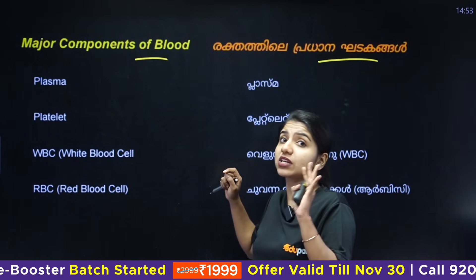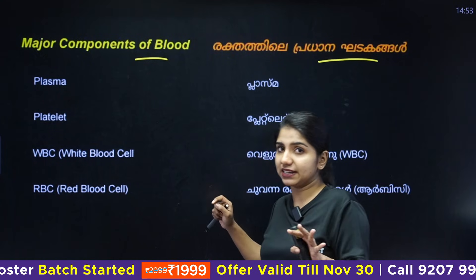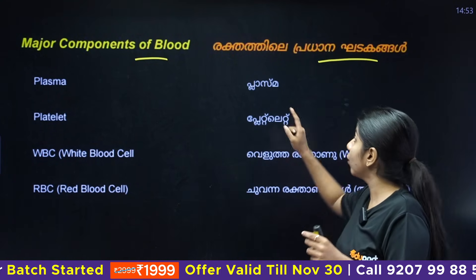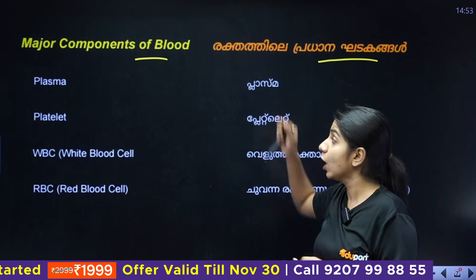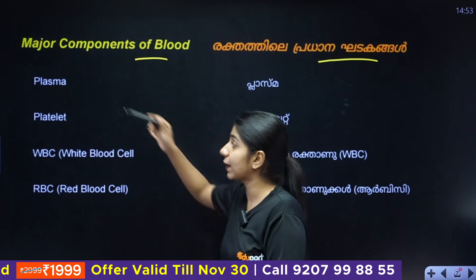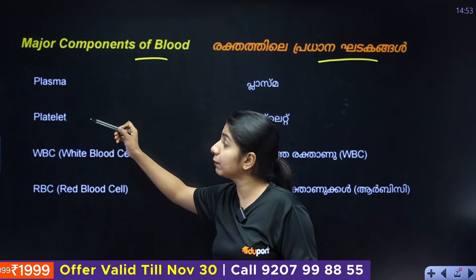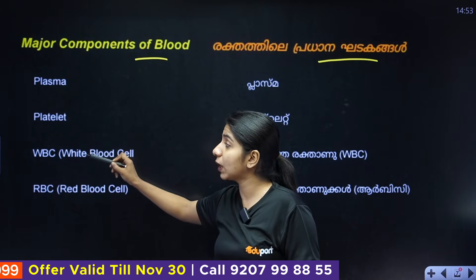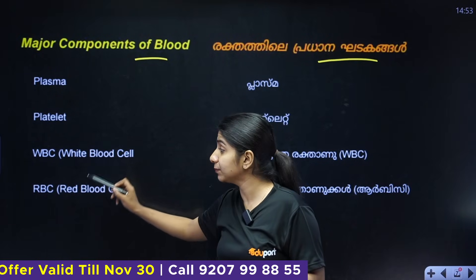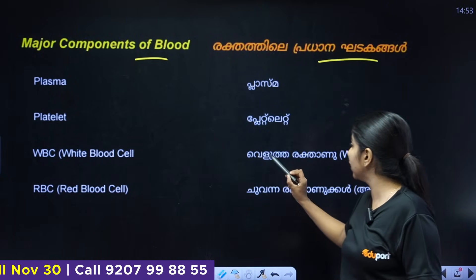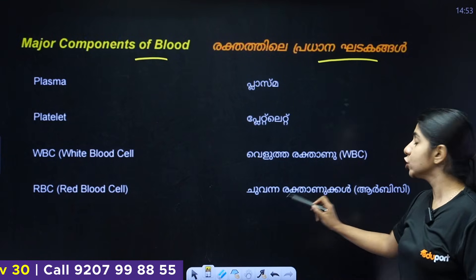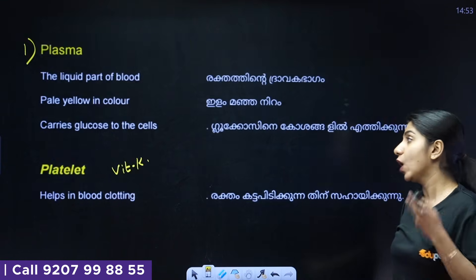The four major components of our blood: the first is plasma, two is platelet, three is WBC, four is RBC. Plasma, platelets, WBC, and RBC.